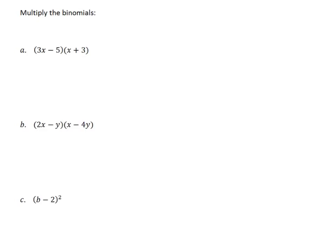In this problem, it asks us to multiply binomials. So you can see we have a binomial multiplied by a binomial in both of these, and then we'll get down to part C later.